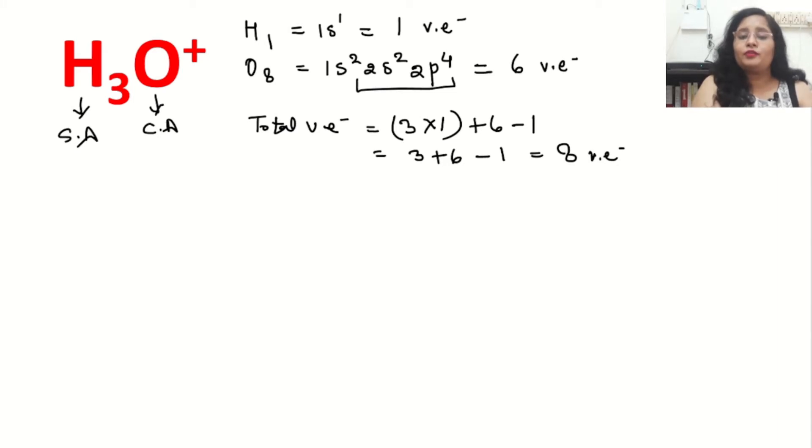The criteria for this is: in any molecule, the atom which is least in number will be the central atom, or which is least electronegative will become the central atom. In all these criteria, oxygen is fulfilling all these things, so we will put oxygen in the center and hydrogen as the surrounding atom.